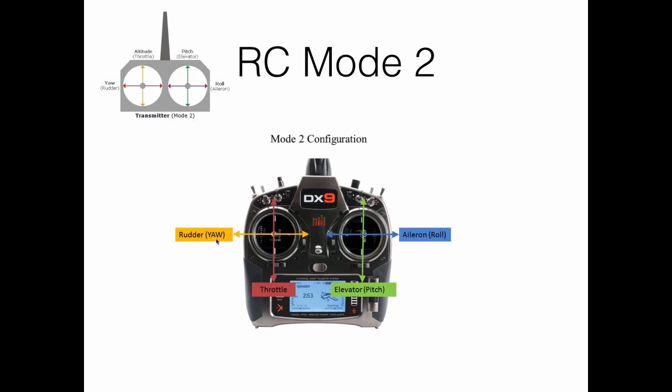The left stick is assigned to move the rudder, that is the yaw, when it is moved left and right, like mode one, but it controls the throttle when it is moved up and down. So the difference between mode number one and mode number two is the assignment of the elevator and the throttle, which are interchangeable from one mode to another.